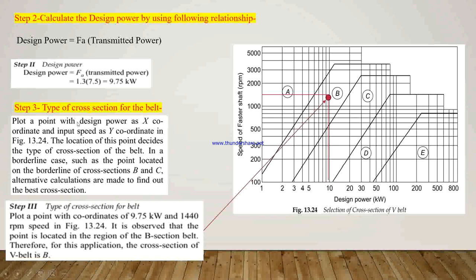In step 3, we have to select the type of cross section for the belt. The method is to plot a point with design power on the X-coordinate and speed of the faster shaft on the Y-coordinate, as shown in figure 13.24. In our example, design power is 9.75 kW and speed is 1440 RPM, so our point falls in section B. Therefore, for this application, the cross section of the V-belt is B.